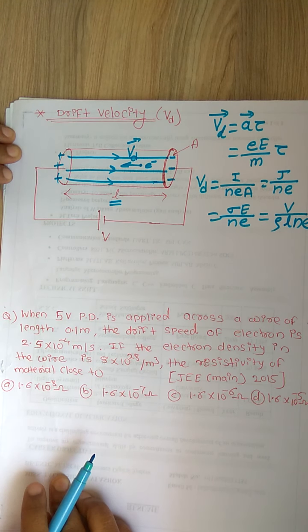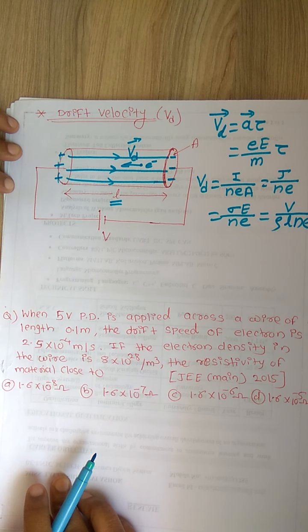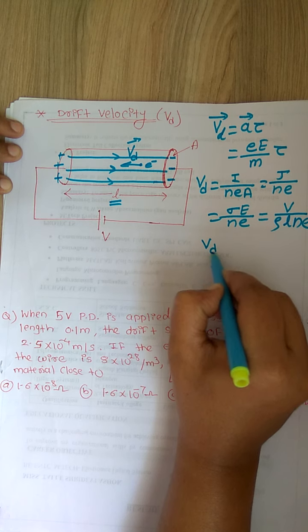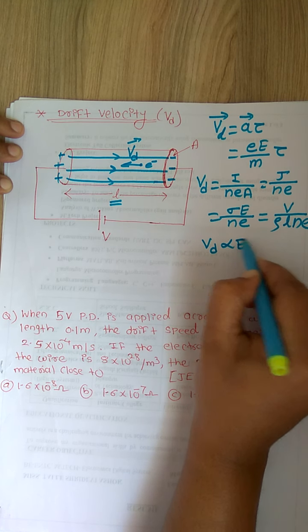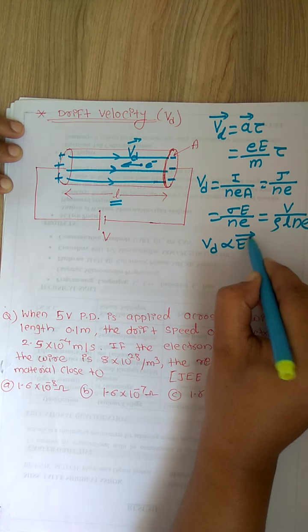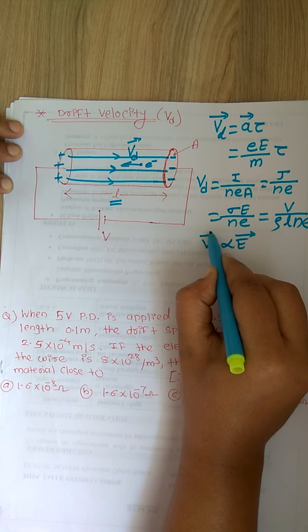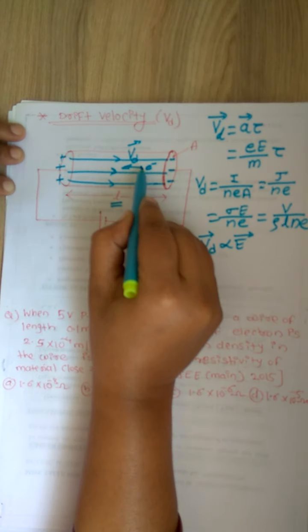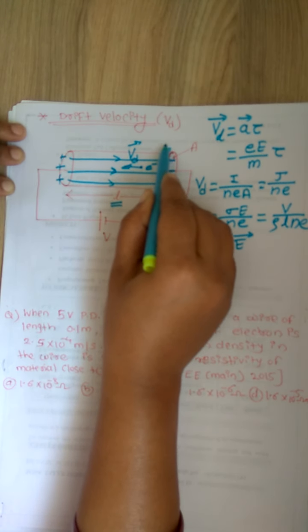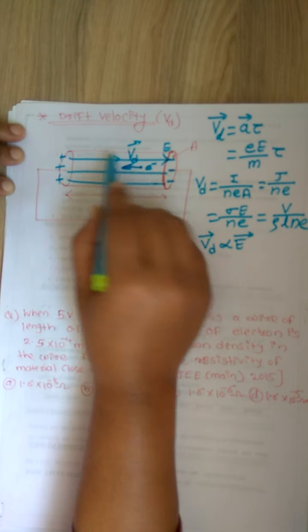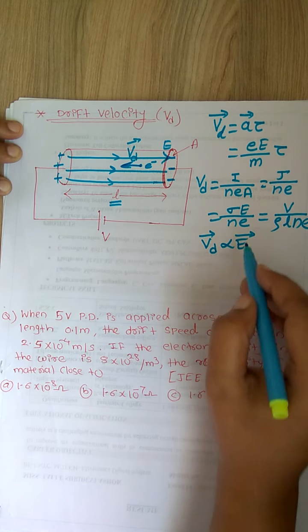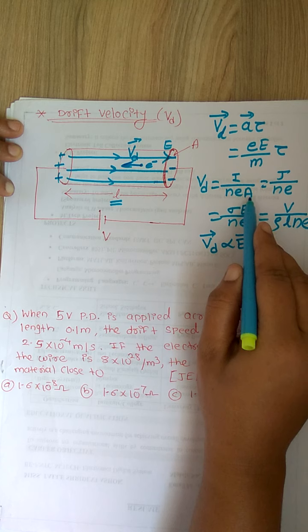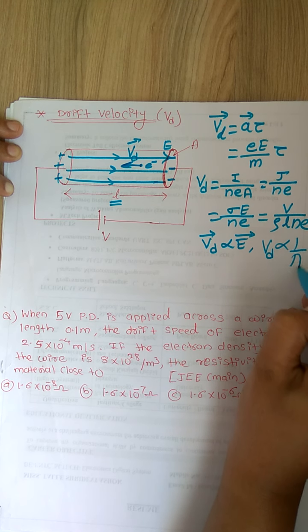Drift velocity is a dependent quantity — it is not constant. Drift velocity is directly proportional to the electric field. However, the direction of drift velocity is opposite to the direction of the electric field, since electrons drift opposite to the field. Drift velocity is also inversely proportional to the area of cross section.